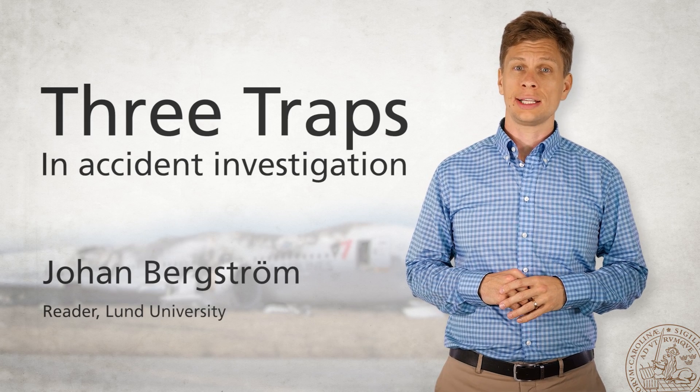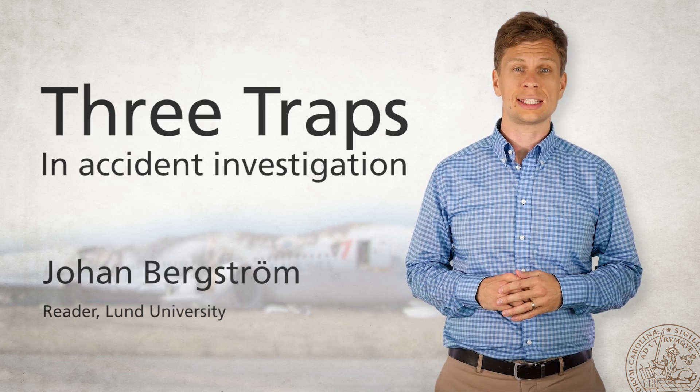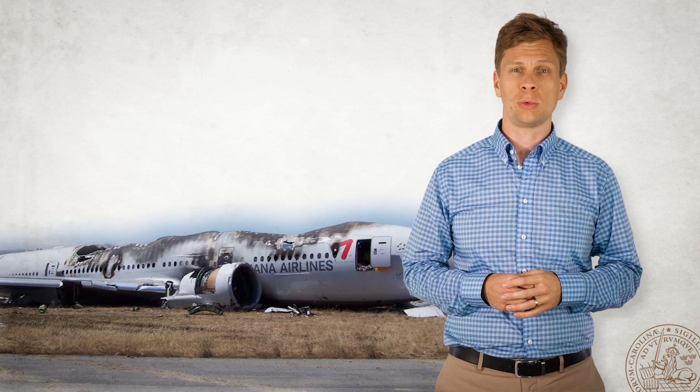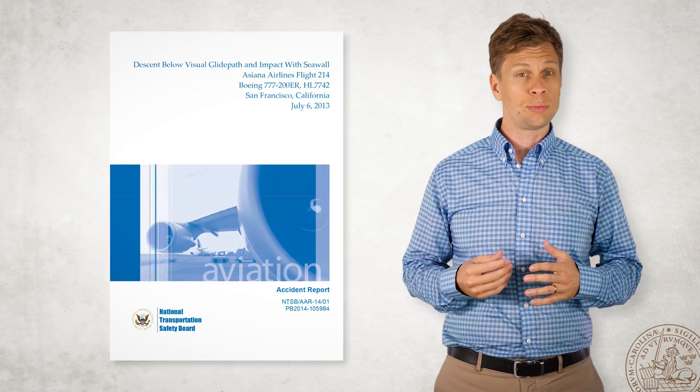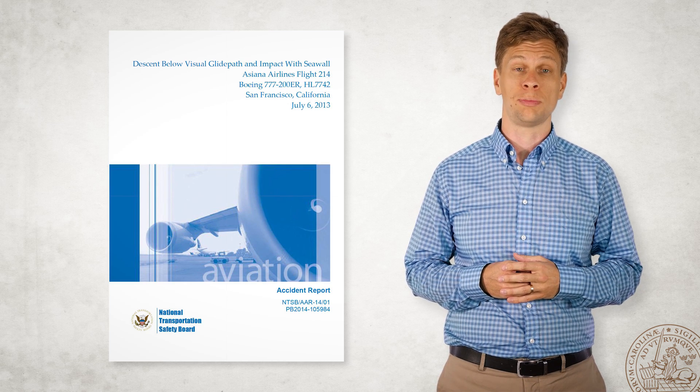When Asiana Airlines Flight 214 crashed on the runway of San Francisco Airport on July 6, 2013, it was up to the National Transportation Safety Board of the U.S. to investigate the causes of the accident, and in their report they focused heavily on human performance on part of the pilots.